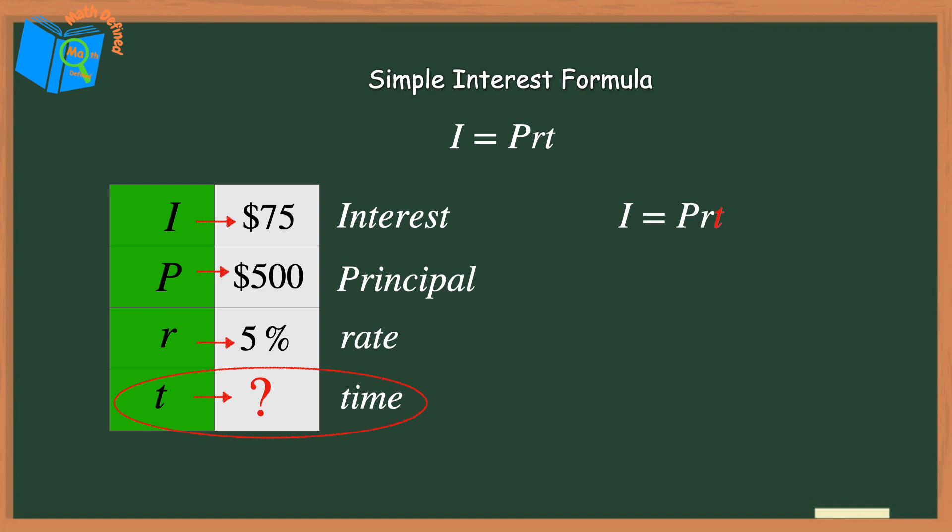To isolate the t, I need to divide each side of the equation by pr. Now I can simplify the right side by cancelling out the prs, leaving just the t. And I'll bring down the fraction on the left.